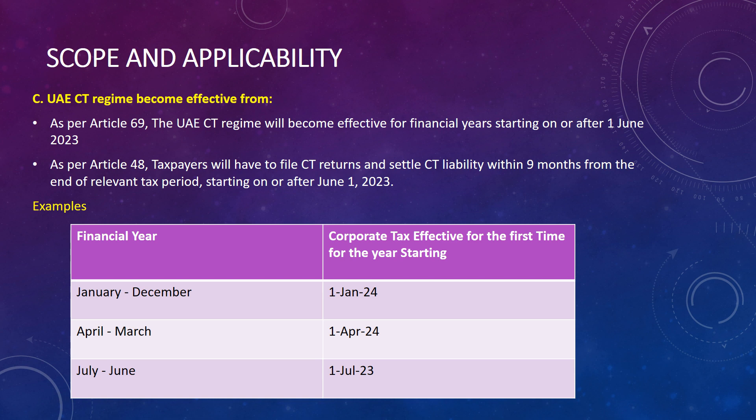The UAE corporate tax regime will become effective for financial years starting on or after 1 June 2023. As per Article 48, taxpayers will have to file corporate tax returns and settle corporate tax liability within nine months from the end of the relevant tax period. Whenever your financial year ends, the government is giving nine months from that date to file corporate tax returns and pay your corporate tax dues.